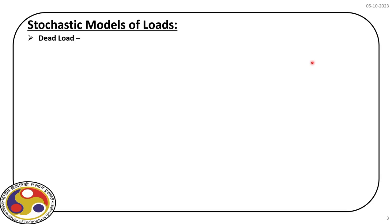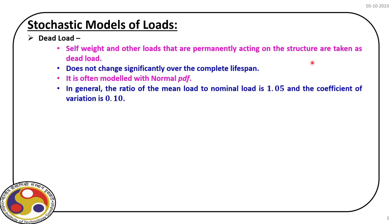If we have a structure, the first load that comes to mind is the dead load acting on the structure. The dead load is governed by the total mass of the structure, which we can evaluate from the geometry and material used. This self-weight acts as a dead load, and there can be other components — for example, in a building, the roofing material also acts as dead load. All these loads are permanently acting on the structure and their magnitude does not change significantly over the lifespan.